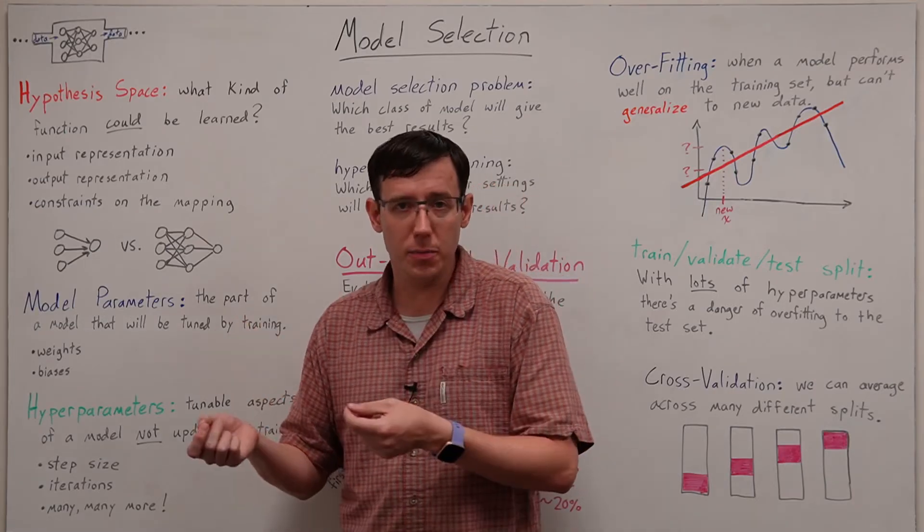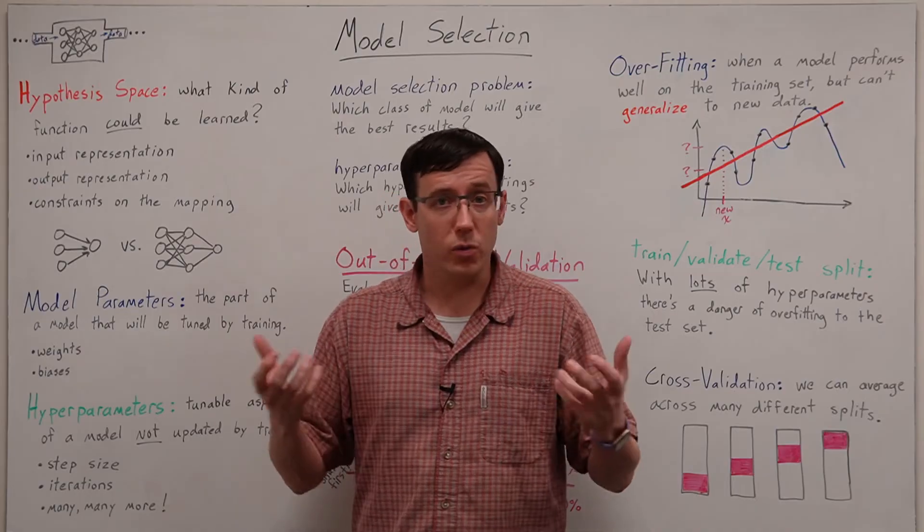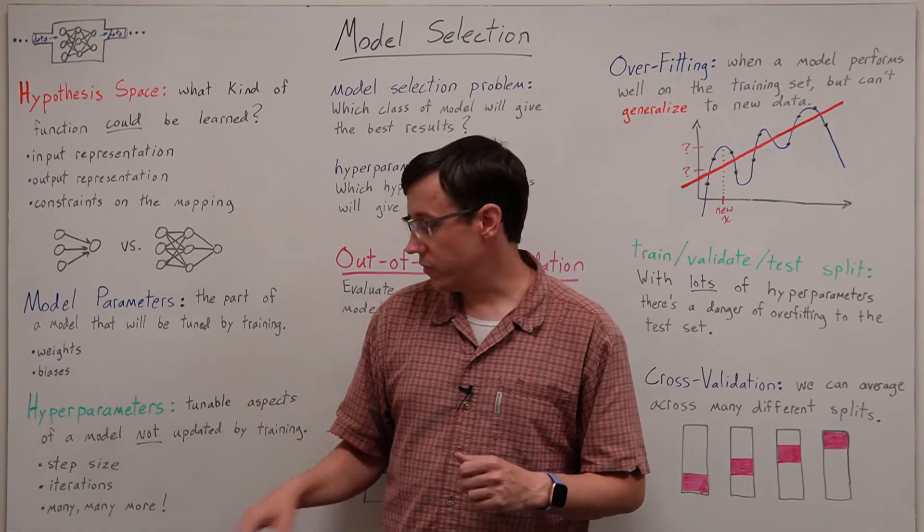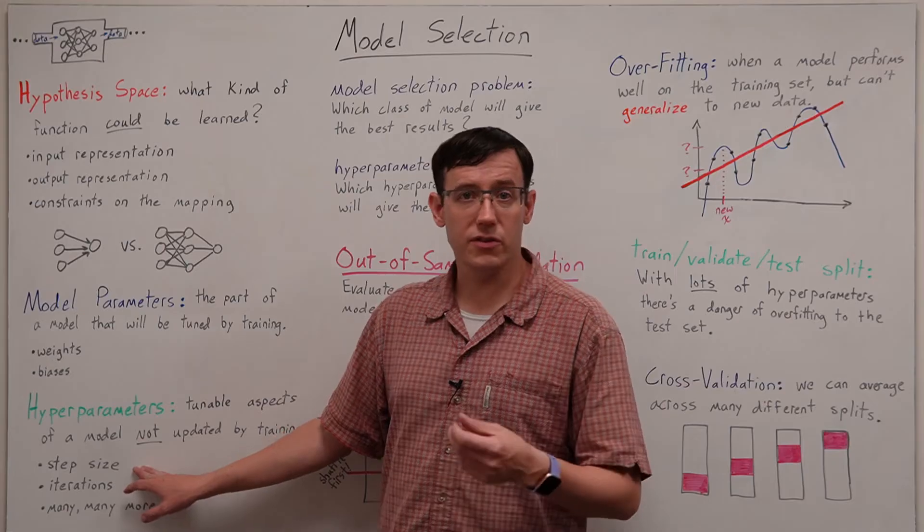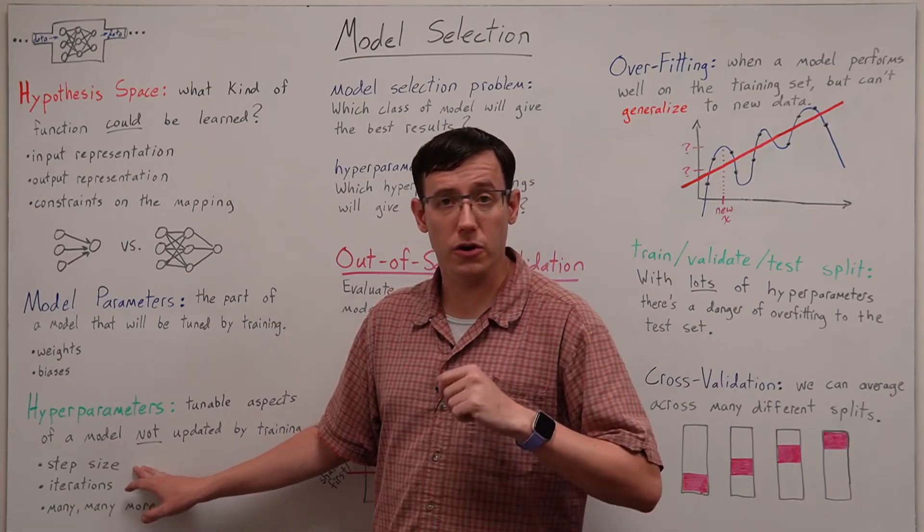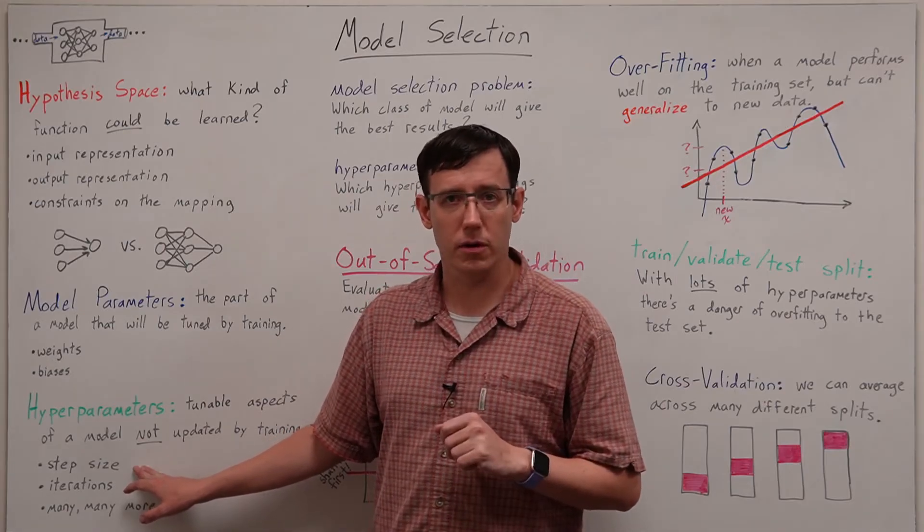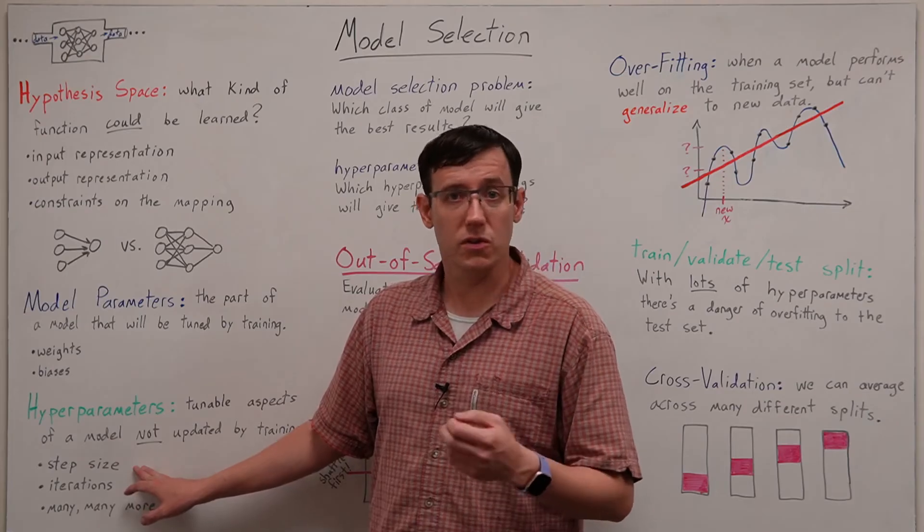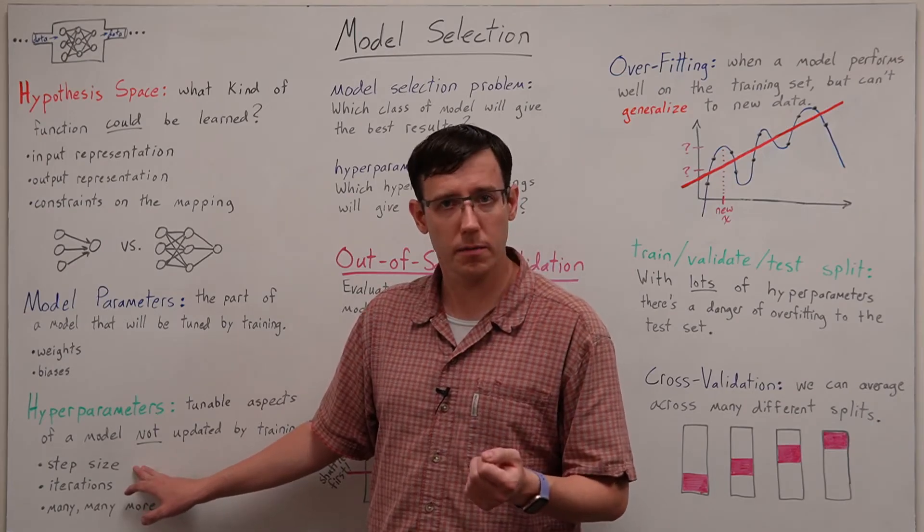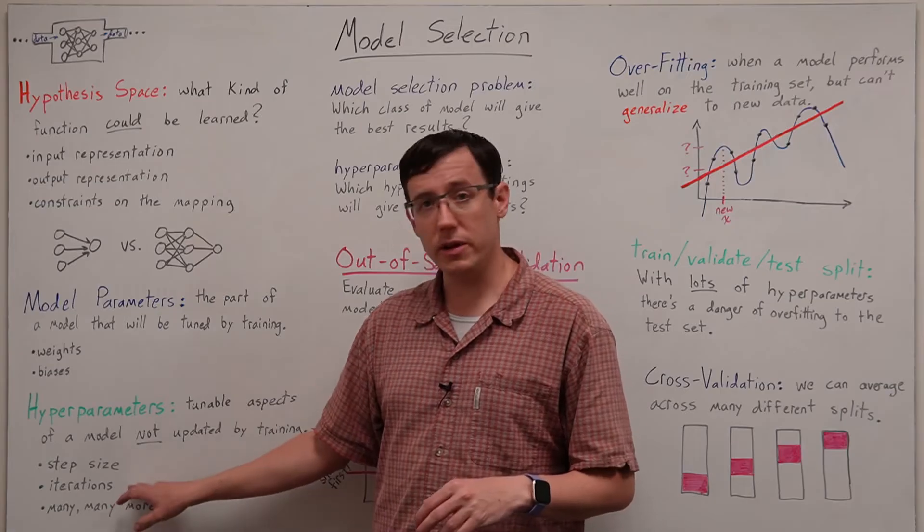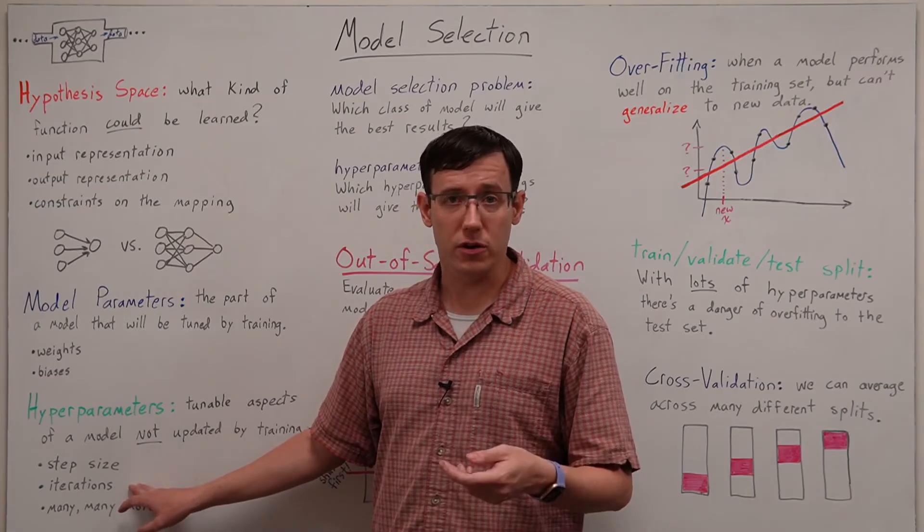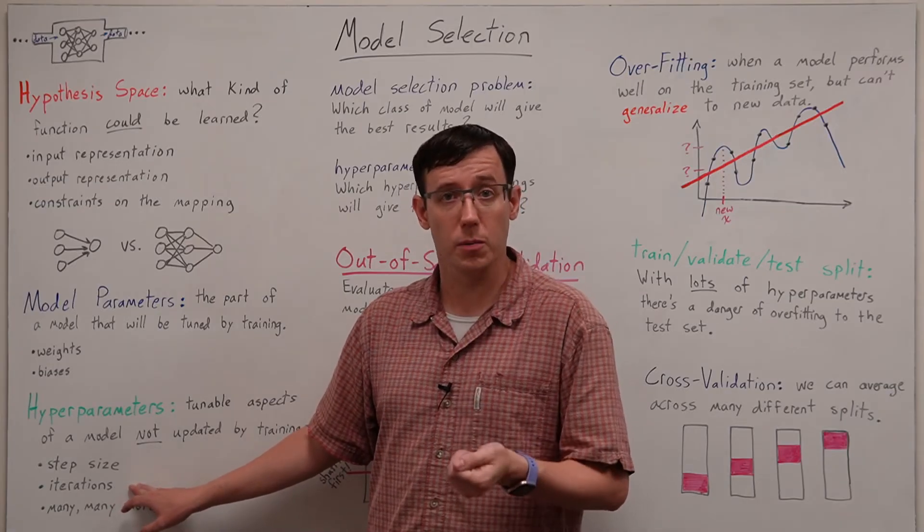But it's also generally the case that some aspects of the model we're using are in principle tunable but are not actually being updated when we train with gradient descent. In the single neuron models we've seen, this included the step size saying how far to go in the minus gradient direction. And in other contexts this is also known as the learning rate.